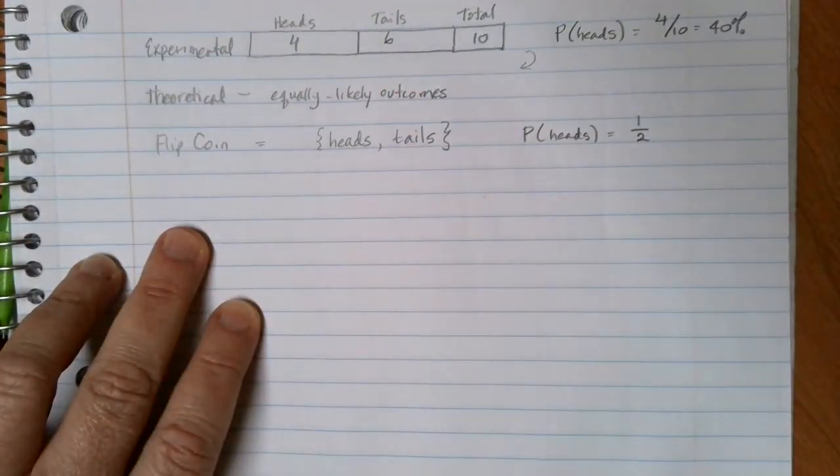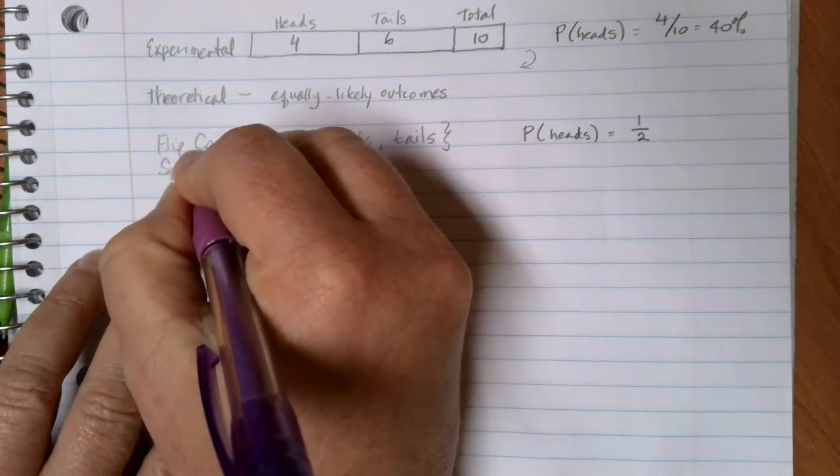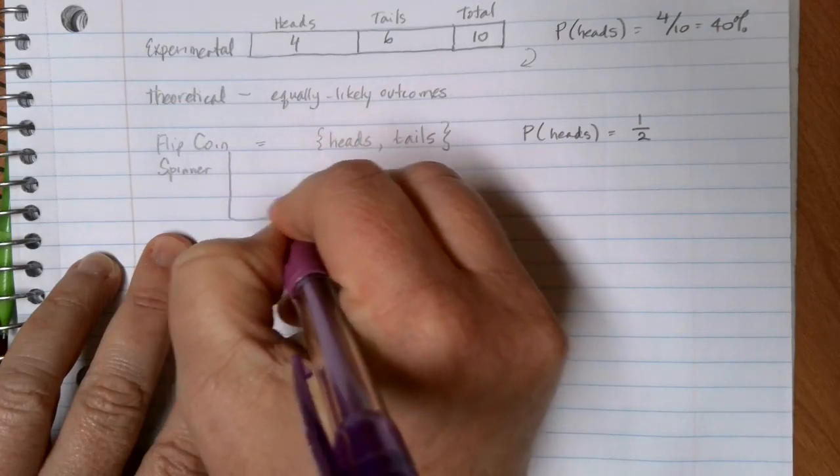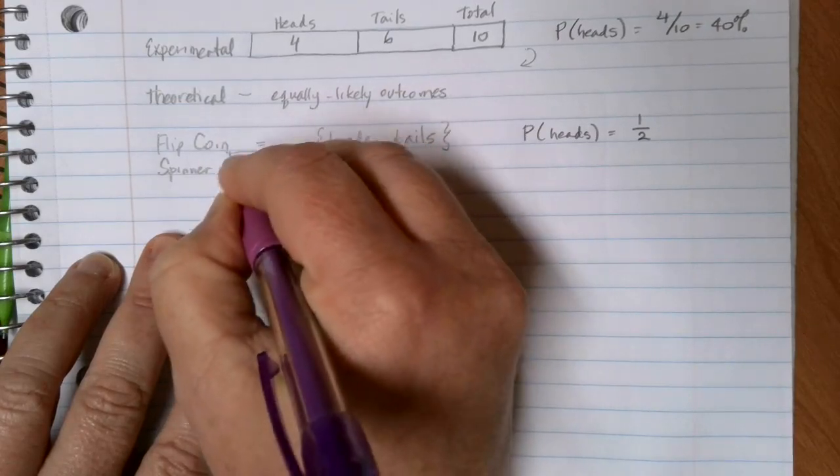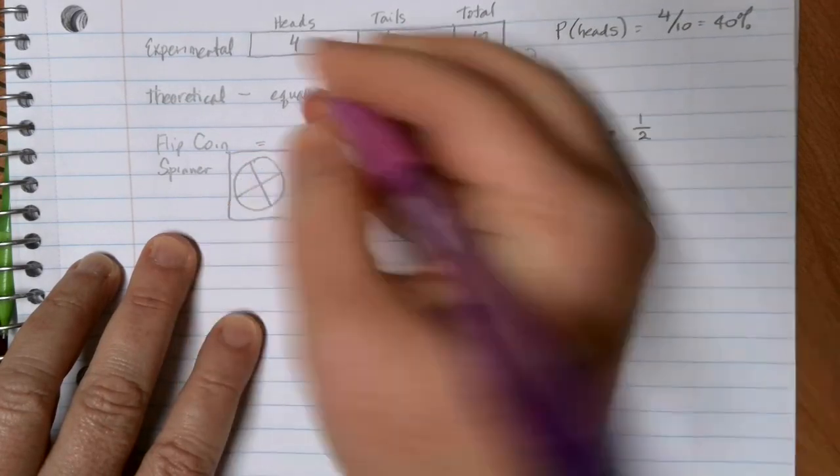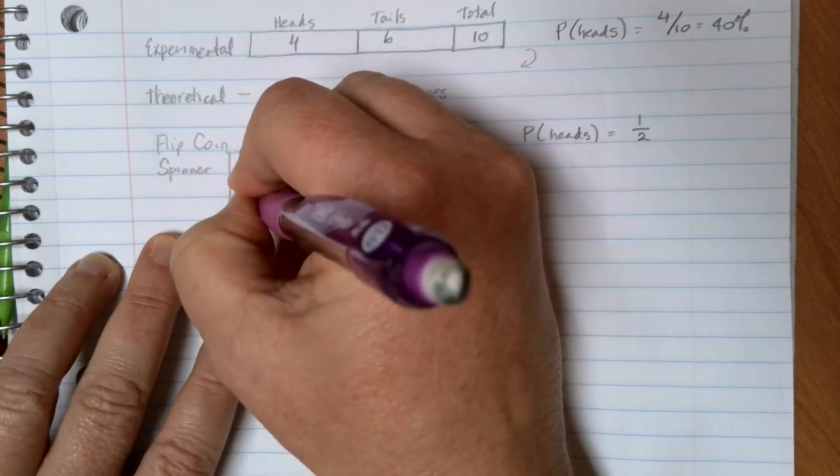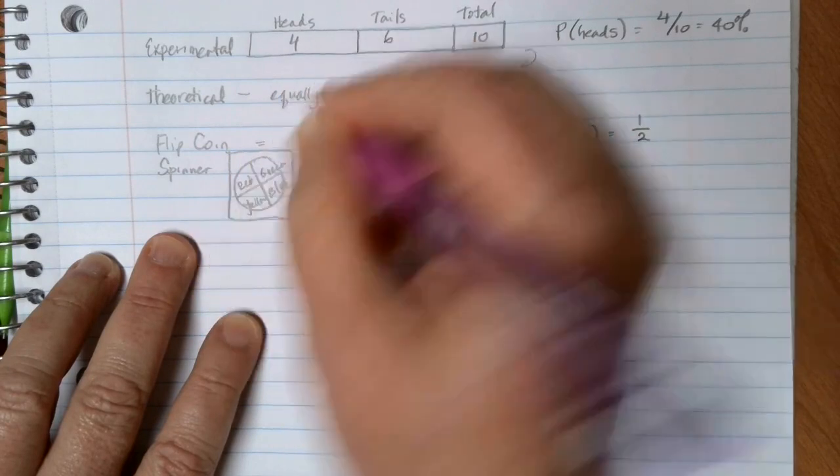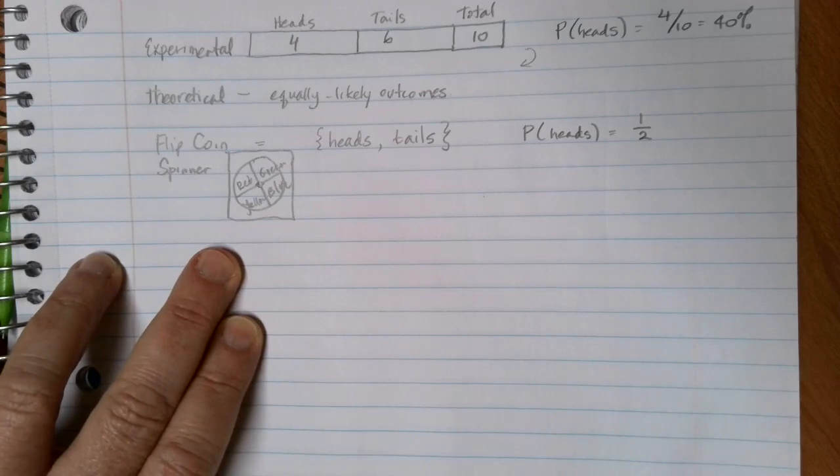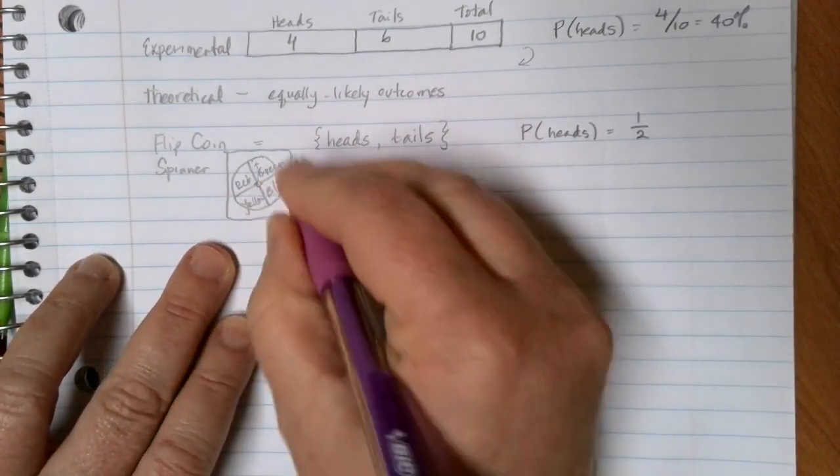Some other common probability questions that we may see sometimes might involve something like, let's say, a spinner. Maybe let's say kind of like a twister or something like that, where you have red and green and yellow and blue. And each one of these is an option that we could get. And they're each equally likely because they're the same size space on the spinner. I can list out all of my options,